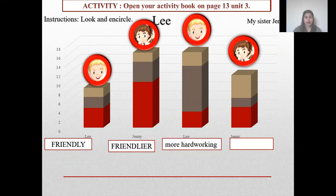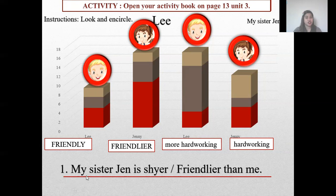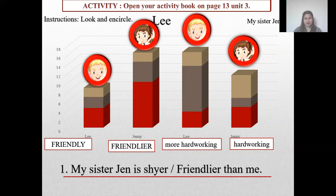More hard-working and hard-working. Number 1 — let us read. My sister Jen is shyer or friendlier than me. Look at the data. Jenny is higher than Lee. So, friendly, friendlier. What is your answer — shyer or friendlier? Friendlier! Because Jenny is friendlier than Lee. My sister Jen is friendlier than me. Very good.